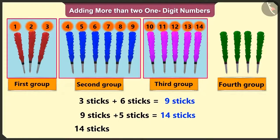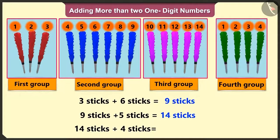To add fourteen to four more sticks, count after fourteen is fifteen, sixteen, seventeen and eighteen. The magician has a total of eighteen sticks.